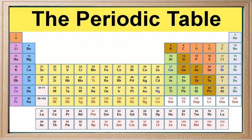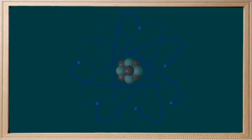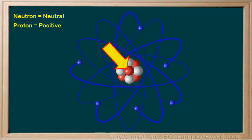But what does the atomic number tell us about the structure of an atom? There are three important subatomic particles that are the building blocks of atoms. One of the subatomic particles, called a neutron, has no charge and is found in the nucleus of the atom. Another subatomic particle, called the proton, is positively charged and is also found in the nucleus of the atom.